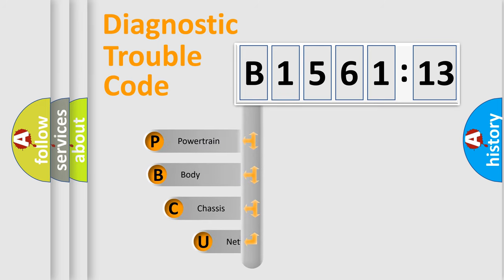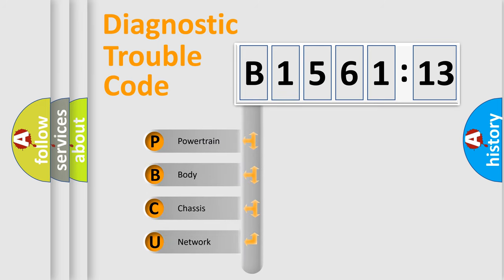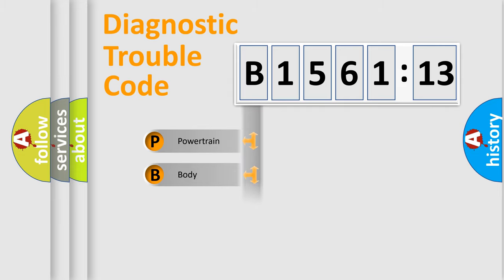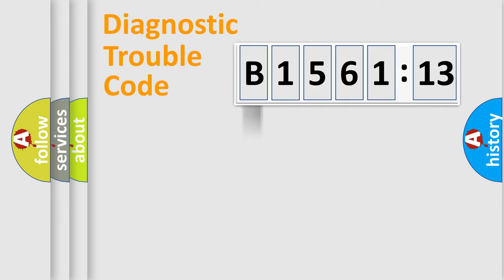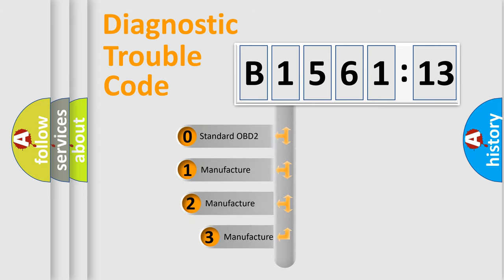First, let's look at the history of diagnostic fault code composition according to the OBD2 protocol, which is unified for all automakers since 2000. We divide the electric system of the automobile into four basic units: Powertrain, Body, Chassis, and Network.